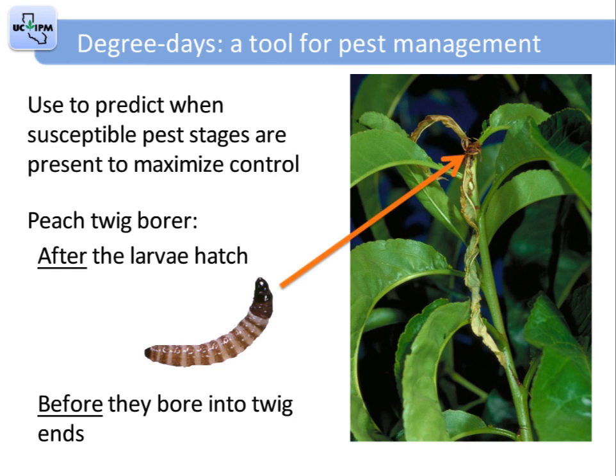This presentation is about using a tool called Degree Days to help you better time insecticide treatments and other pest management practices in your orchards. Use Degree Days to predict when susceptible pest stages are present so you can maximize control. For example, you need to apply an insecticide for peach twig borer after the majority of larvae hatch but before they bore into the ends of twigs where insecticides won't reach them. Use Degree Days to pinpoint the best time to kill the most peach twig borer larvae with a single application.